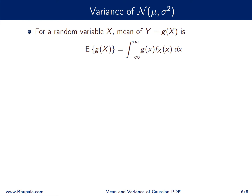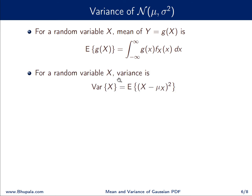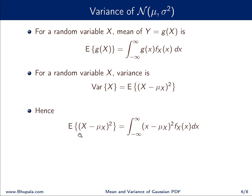Next we evaluate the variance. Before doing so, we define the expectation of a function of a random variable: E[g(X)] = ∫_{−∞}^{∞} g(x) · f_X(x) dx. For any random variable X, variance is defined as Var(X) = E[(X − μ_X)²]. Comparing with the above, this is the expectation of g(X) = (X − μ_X)².